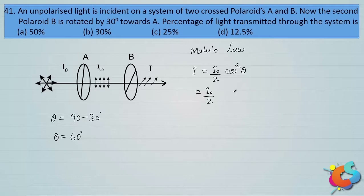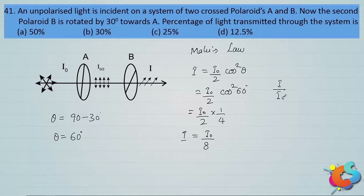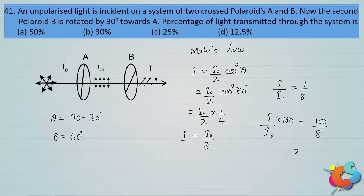Substituting, I = (I₀/2) · cos²60°. Since cos 60° = 1/2, cos²60° = 1/4. So the emergent intensity is I₀/8. The transmission percentage is (I/I₀) × 100 = (1/8) × 100 = 12.5%. So the answer is 12.5%.